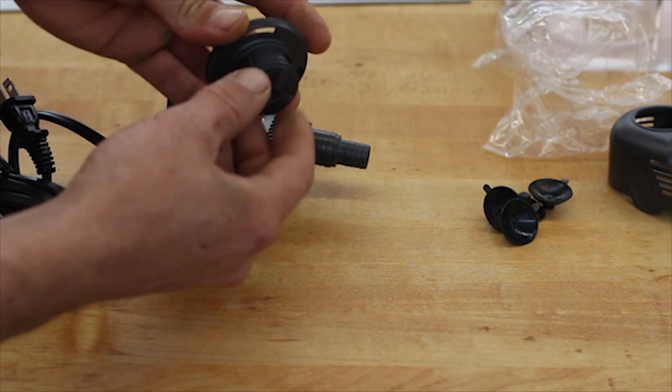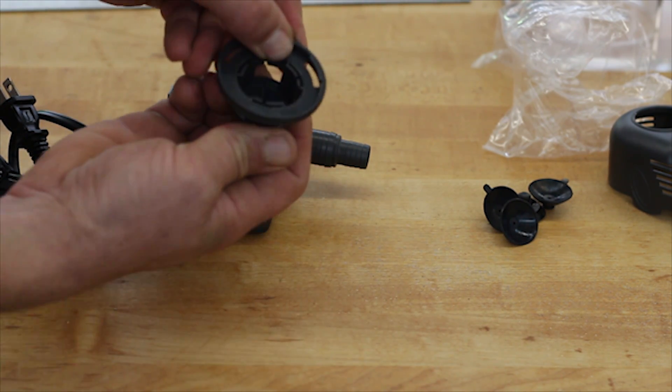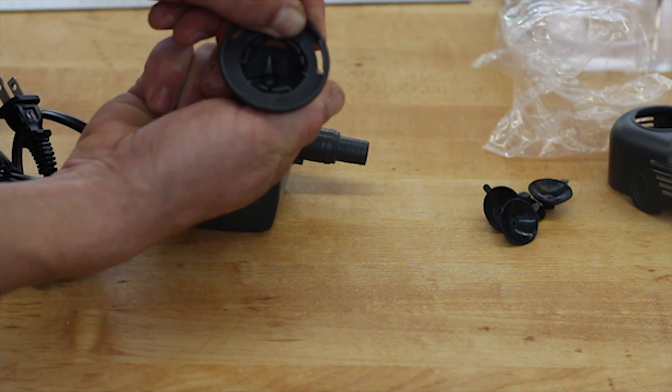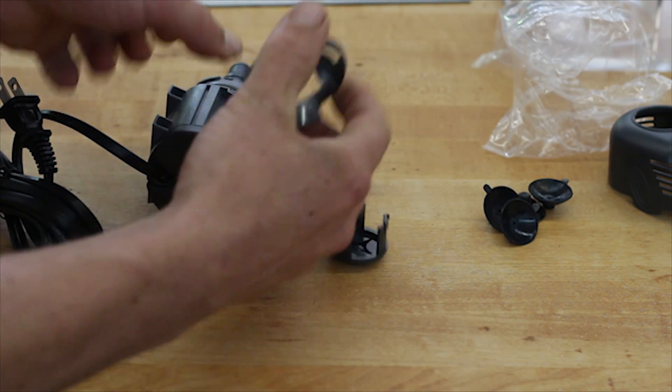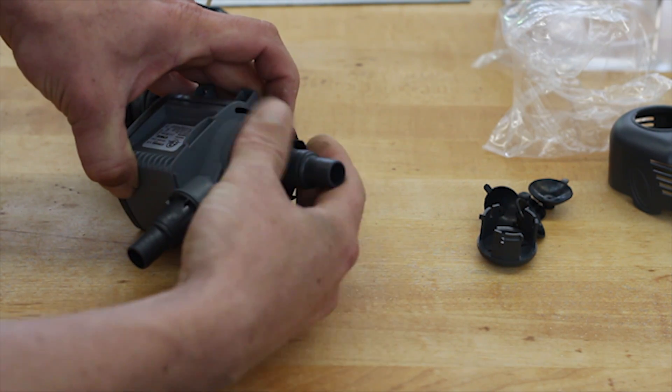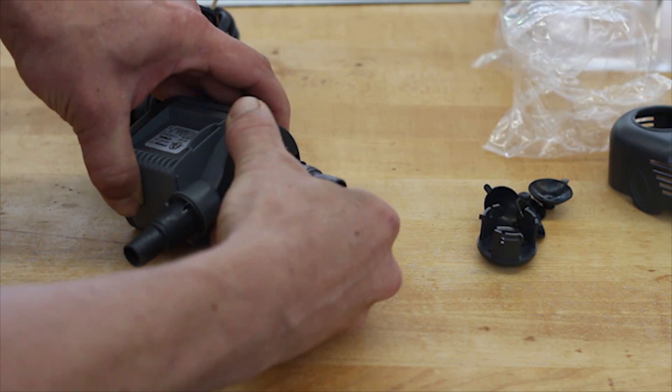We're going to take the volute cover and remove the center from it. Place this over the intake barb and screw it on.